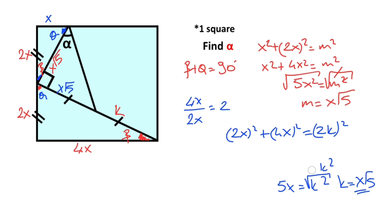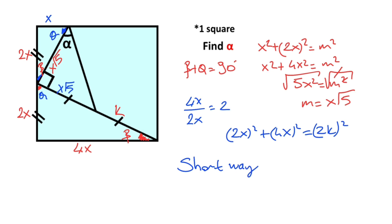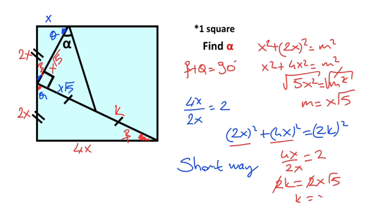Or you can think of it this way as a short cut: notice that the ratio of these two sides equals 2, so the hypotenuse is always the shorter side times root 5. Now, if you focus on this triangle, notice that this triangle is an isosceles right triangle, so alpha is going to be 45 degrees. If you want more videos like this, please subscribe to my channel.